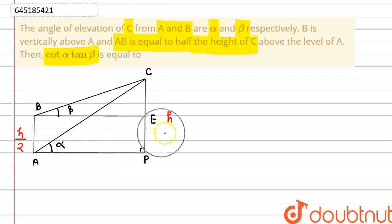And as we can see, AB and PE are parallel. So PE is also equal to H by 2, and CE is also equal to H by 2.